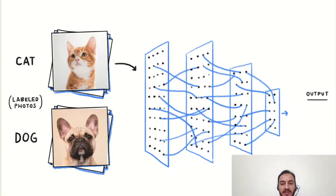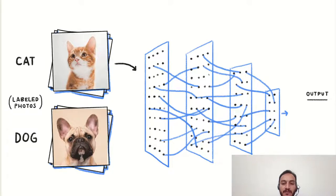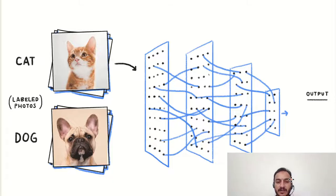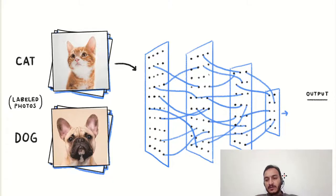A model is then trained. The same process is repeated — the same feature extraction will be done during testing, and then the model will be able to predict the test images or test data. This is how a machine learning model works, or even a deep learning model works.